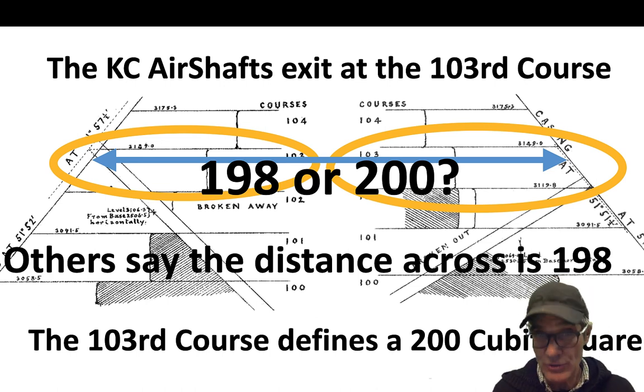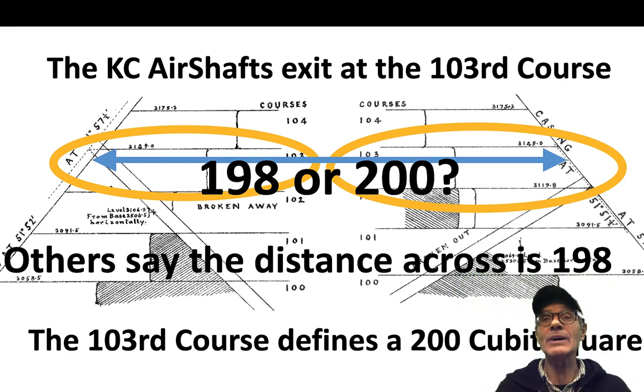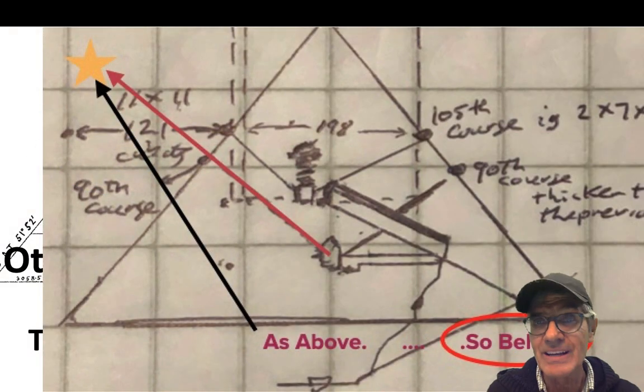I found that the 103rd course, which I showed the two air shafts exit, that is 200 cubits. But the 104th course right above it comes out to an almost even 198. So it's interesting - the two course layers right next to each other come out to almost even cubits. 198 and 200 both seem to be vindicated that way.